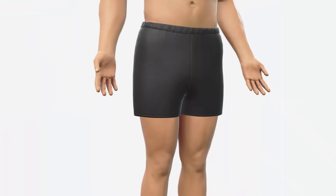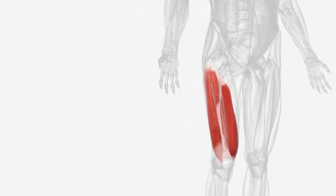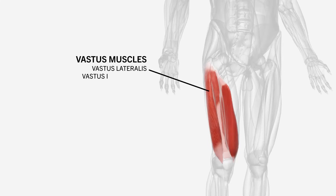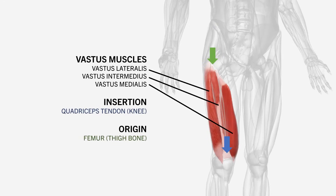First let's look at the anatomy of the quadriceps. As the name implies, the quadriceps is a group of four individual muscles. Three of these muscles we can call the vastus muscles: the vastus lateralis, vastus intermedius, and vastus medialis. These three vastus muscles all insert at the quadriceps tendon which attaches to the kneecap. They all originate at different points on the femur, which is the thigh bone.